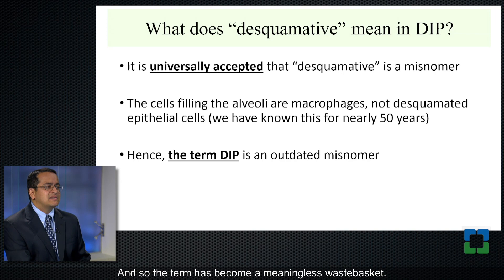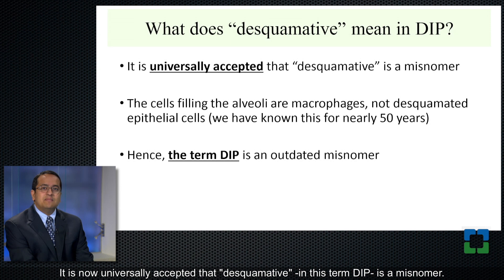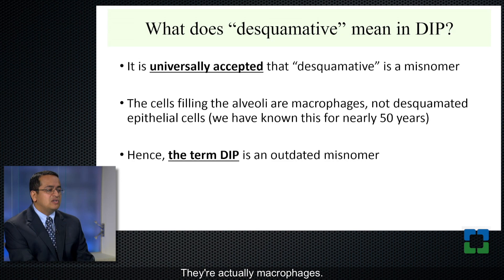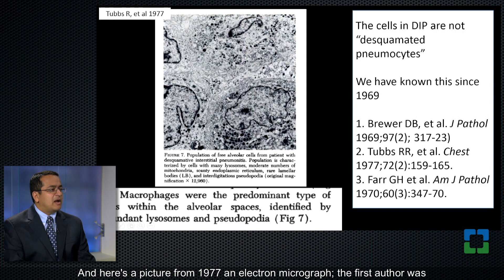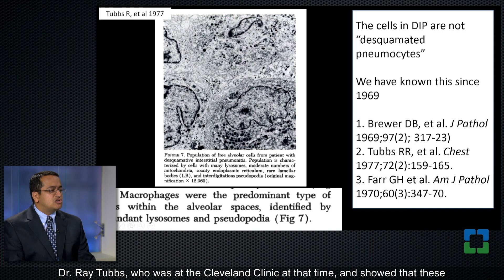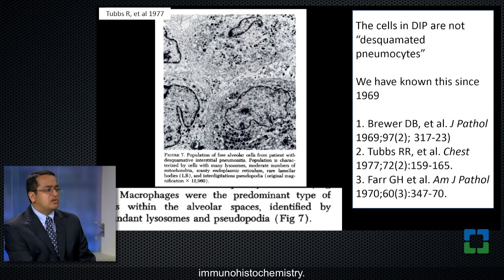It is now universally accepted that 'desquamative' in the term DIP is a misnomer — the cells filling the alveoli are not desquamated epithelial cells; they're actually macrophages. Here's a picture from 1977, an electron micrograph — the first author was Dr. Ray Tubbs, who was at the Cleveland Clinic at that time — and it showed that these cells were actually macrophages by electron microscopy, proven later by immunohistochemistry.